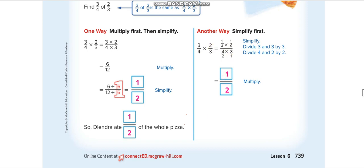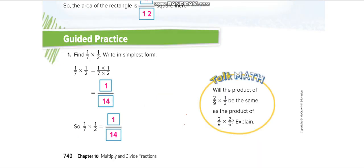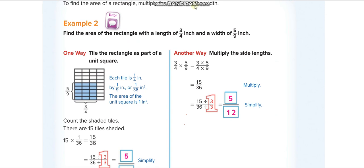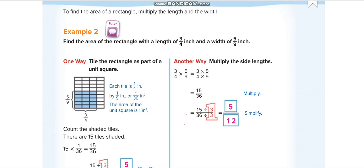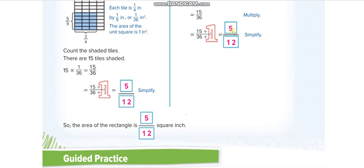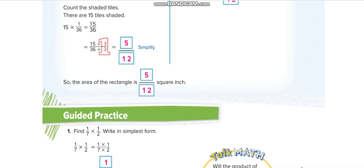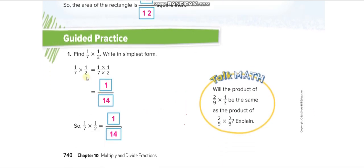Let's move to the next page. Here they are finding the area of a rectangle with length of 3 over 4 inch and 5 over 9. You guys know how to find the area of a rectangle: length times width. Multiply the length with the width. The numerators with the numerators: 3 times 5 is 15. 4 times 9 is 36. 15 over 36. We can simplify this, divide by 3. 15 divided by 3 is 5, and 36 divided by 3 is 12.